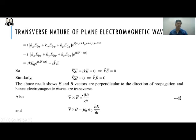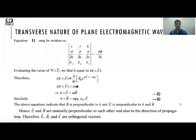The results K·E = 0 and K·B = 0 show that E and B vectors are perpendicular to the direction of propagation, and hence electromagnetic waves are transverse in nature. Now, using curl E = −∂B/∂t and curl B = μ₀ε₀ ∂E/∂t, we write curl E in determinant form and equate it to −∂B/∂t.